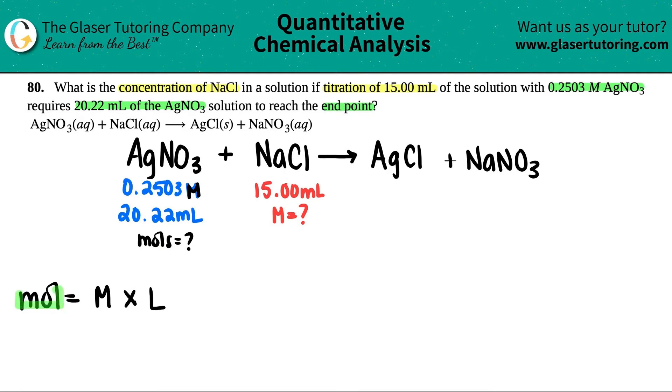So I want to solve for moles. I have my molarity, they told me it was 0.2503. But if I'm using this formula, it has to be in liters. They gave me 20.22 mL, so I have to go to liters first. From mL to liters, you're always going to just divide by 1000. Similarly, you could take the decimal and move it to the left three times. So in this case, it would be 0.02022.